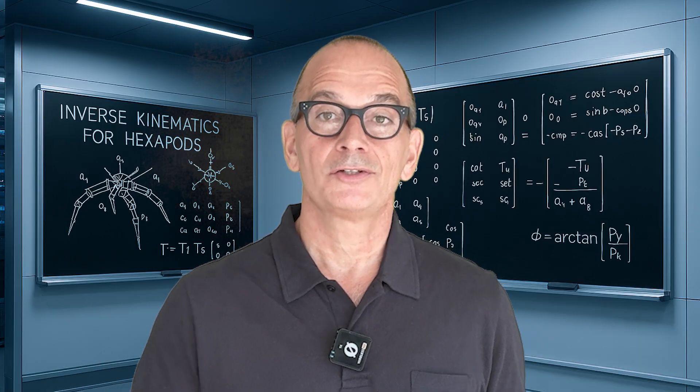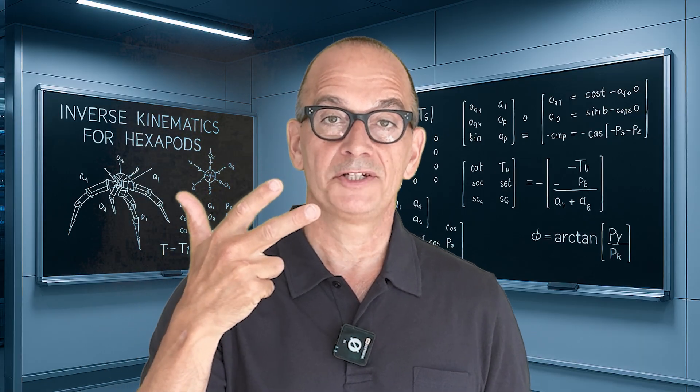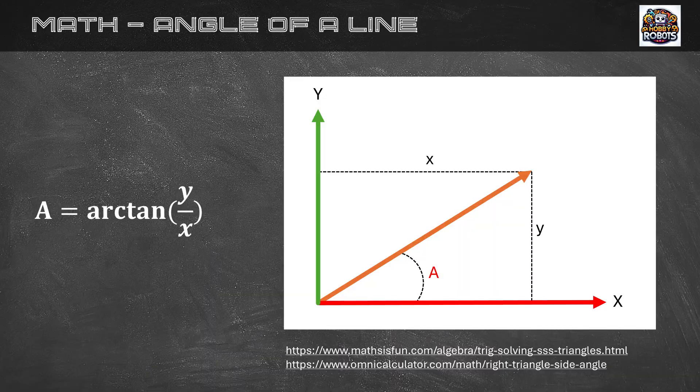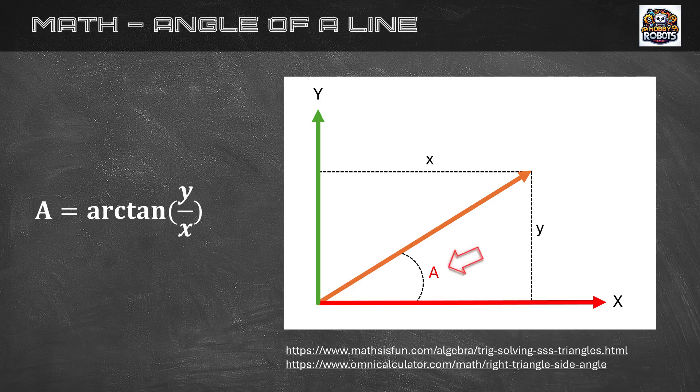To make inverse kinematics the only math you need is just three types of calculations. The first calculation is how to find the angle of a single line, let's call it a. If you know the values of x and y, the formula to calculate the angle is a simple arc tan function.